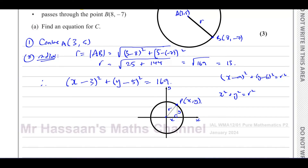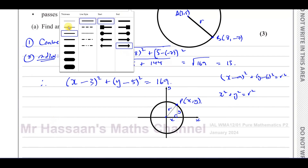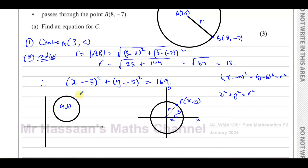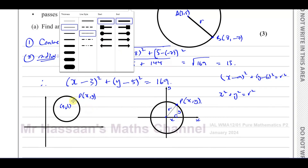Now if the circle was not centered at the origin — suppose it was a circle centered off the origin somewhere — let's say we had a circle with center over here. We're going to call the center (A, B), and this is the point P, which we'll call (x, y). In this case, the radius of the circle would be the hypotenuse of a right-angled triangle.